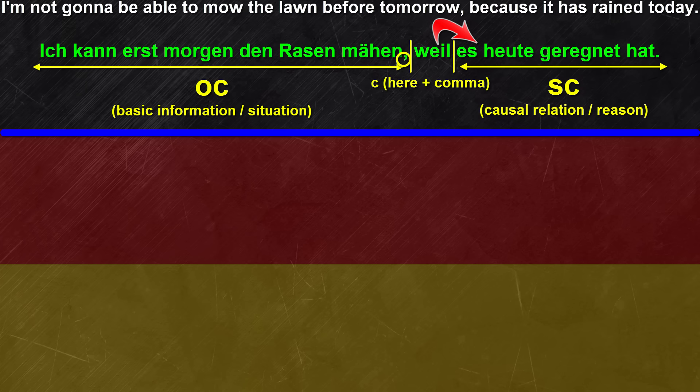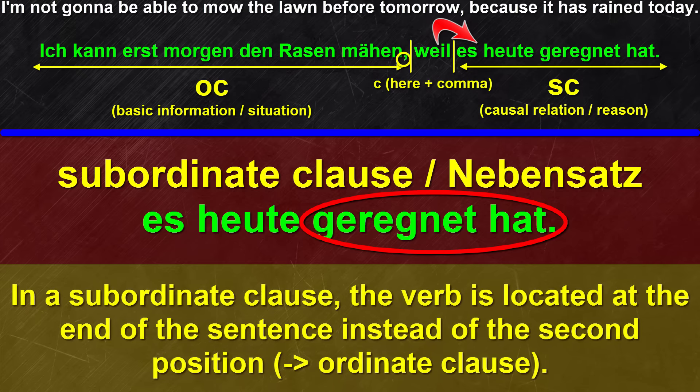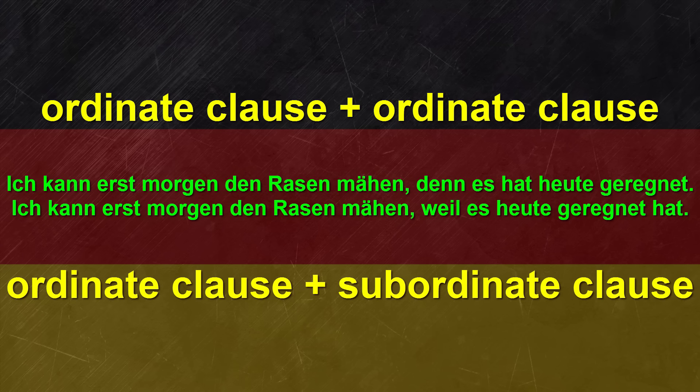Have you found the difference? The verb can be found at the end of the sentence. So it's not only 'denn' versus 'weil' — that would be too easy. It's also about the shift of the verb 'hat' from position two to being the last word of the sentence. Compare: 'Ich kann erst morgen den Rasen mähen, denn es hat heute geregnet' versus 'Ich kann erst morgen den Rasen mähen, weil es heute geregnet hat'.